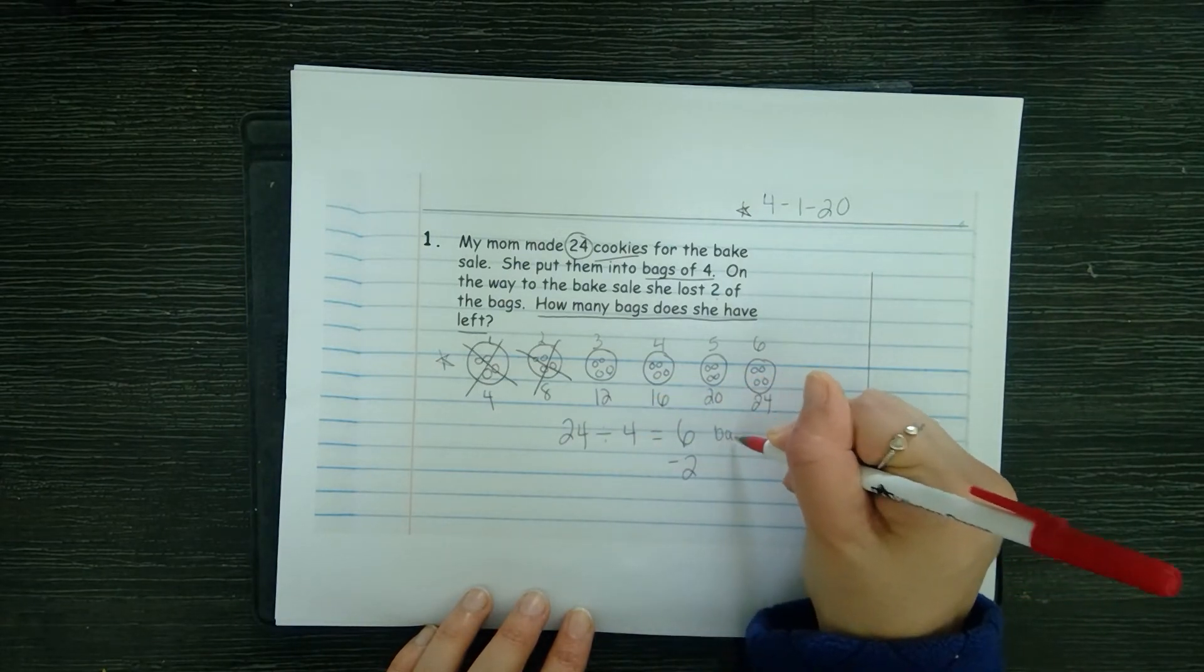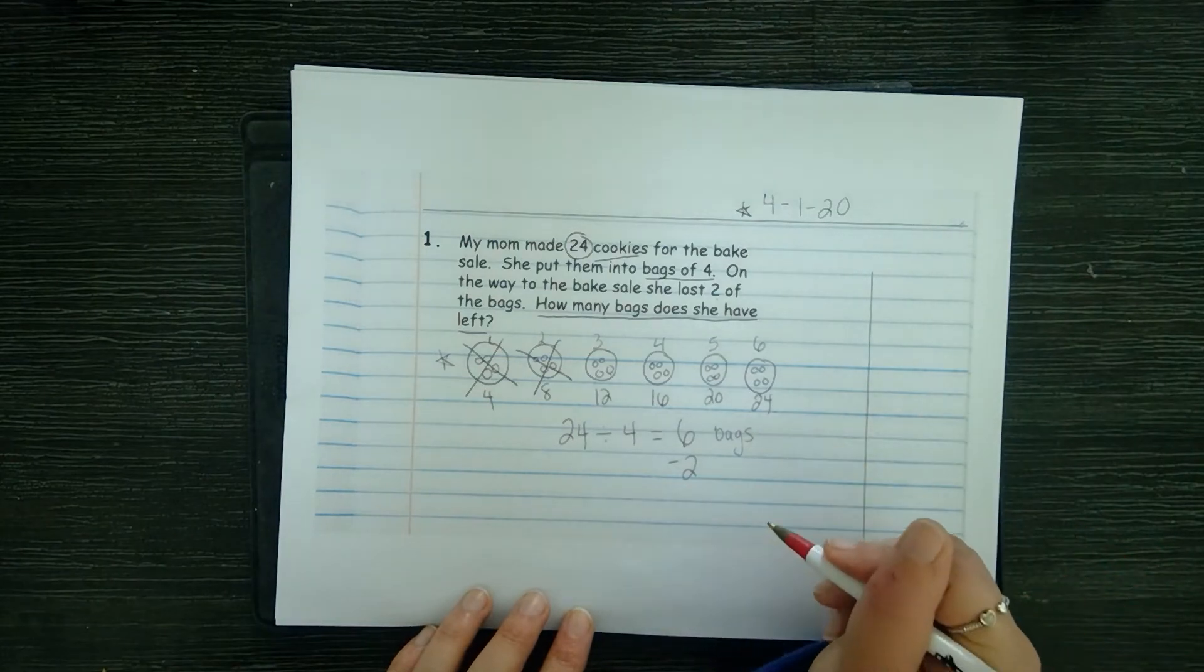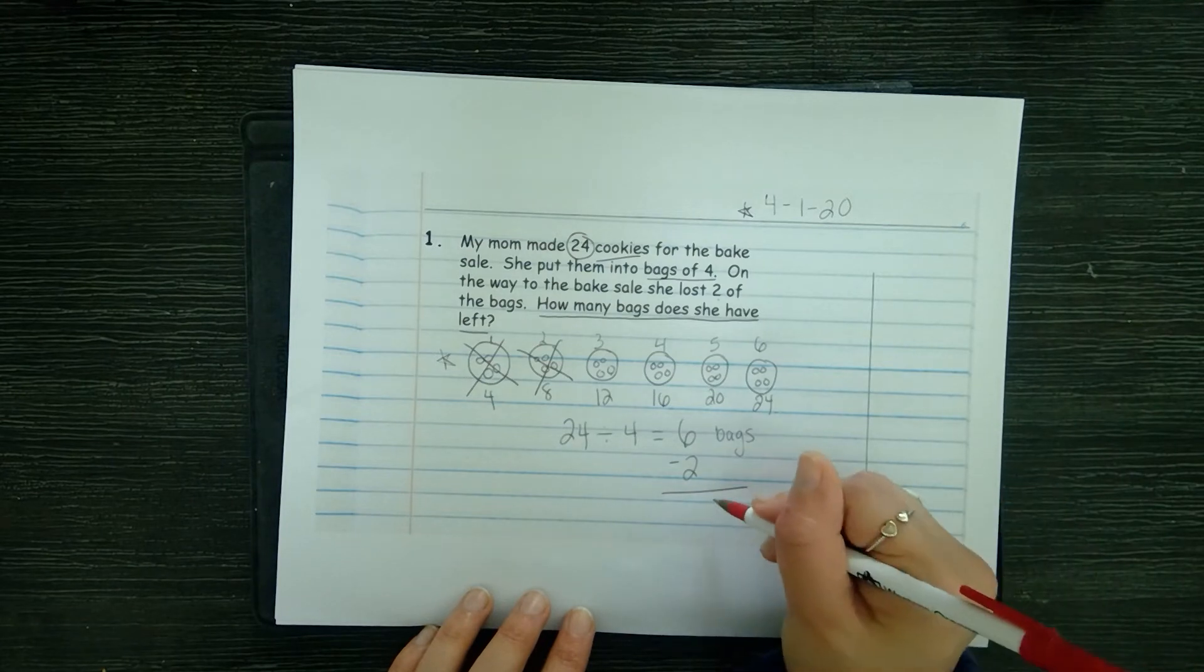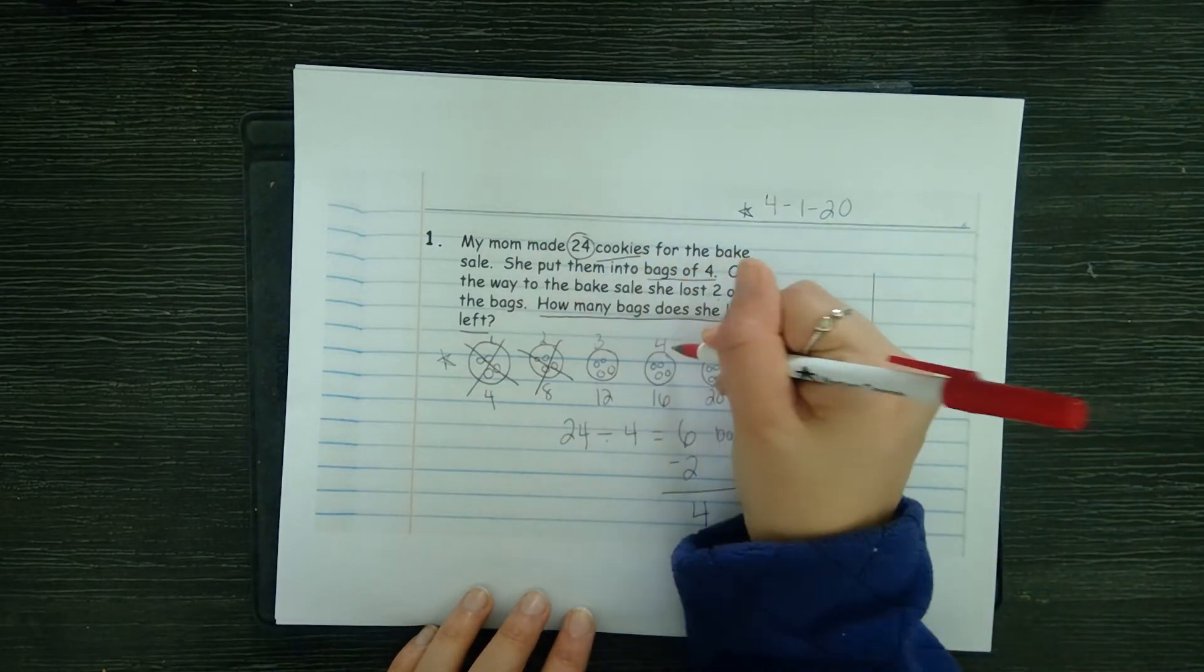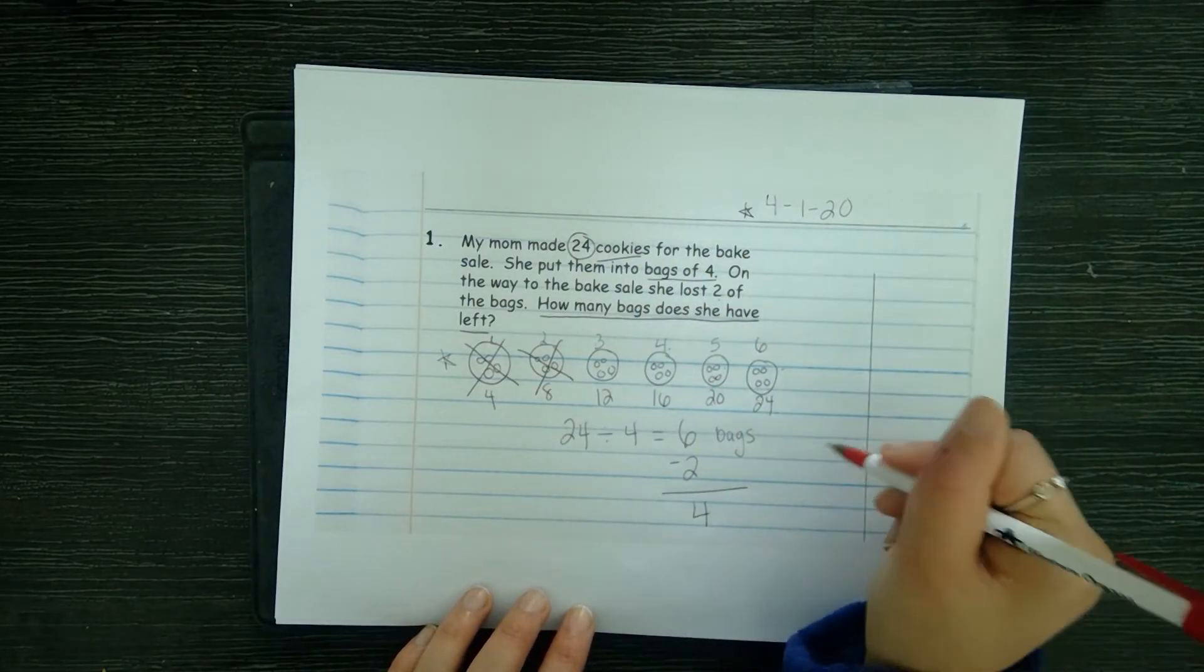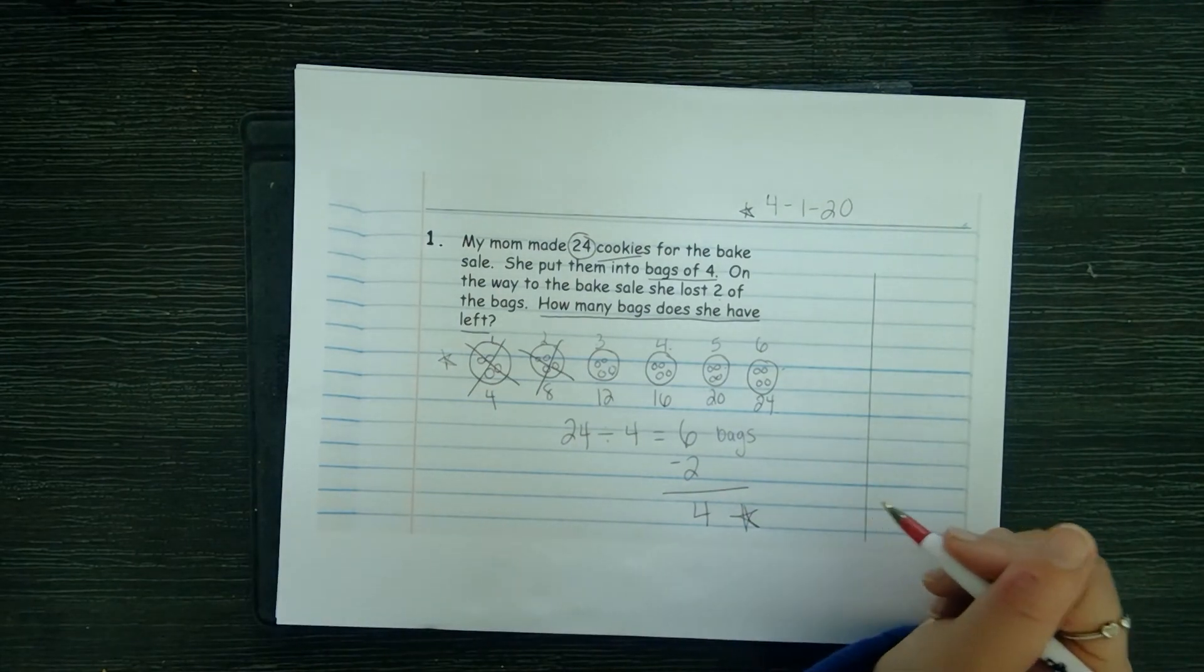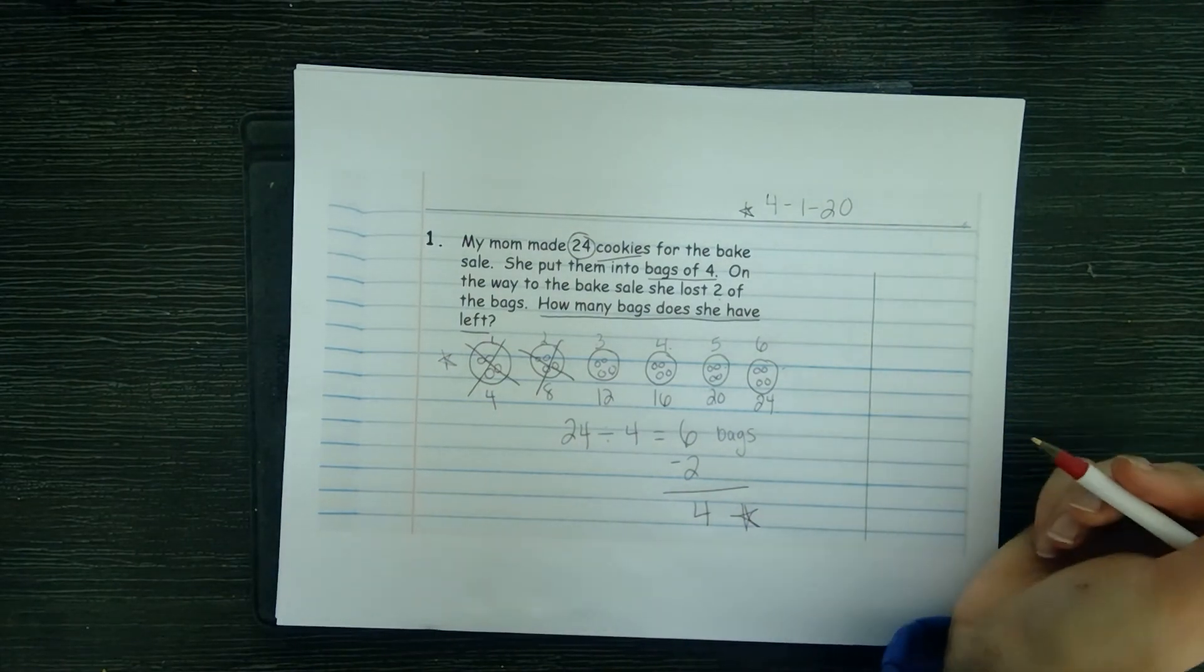But then if we subtract two bags, how many bags do we have left? Four. One, two, three, four. Give yourself a star if you got four somehow on there, somehow showed that work on your paper.